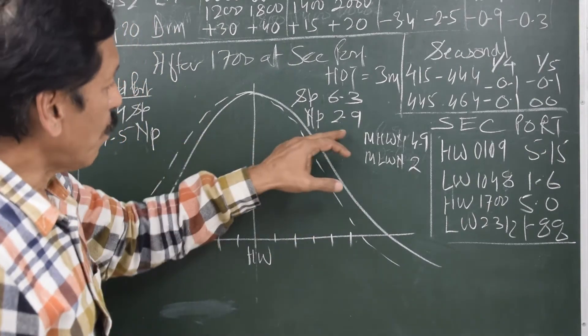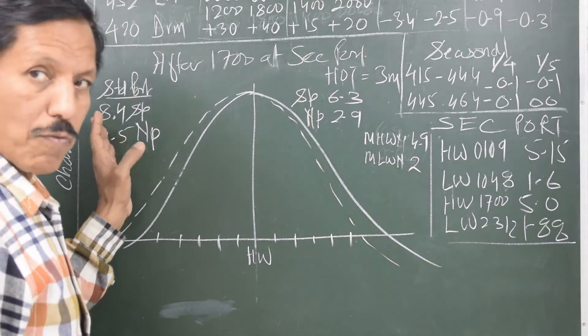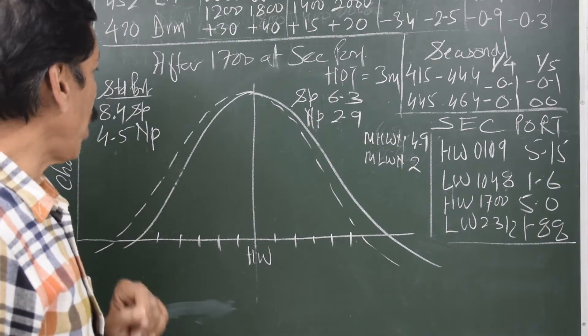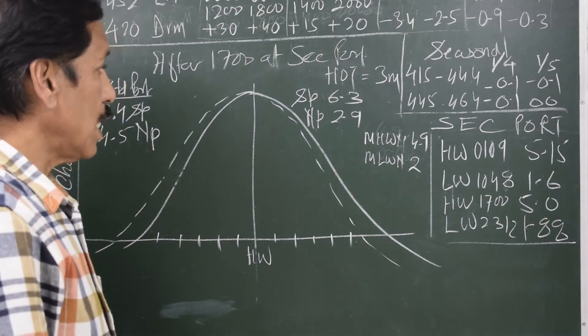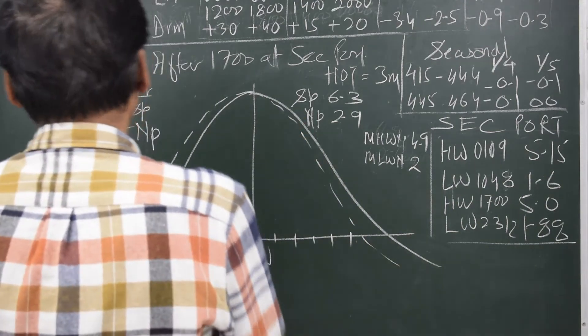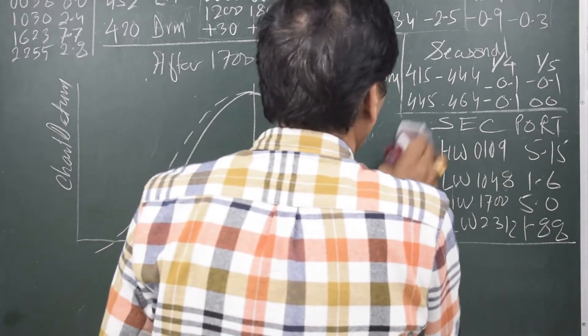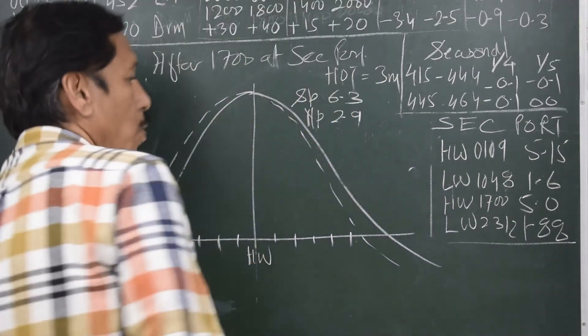So we should be using the neap line and sound lines for 2.9 and 6.3, rather than 4.5 and 8.4. 4.5 and 8.4 are the ranges for standard port. We will be using 2.9 and 6.3. So I erase this standard port ranges.